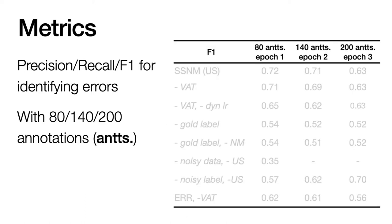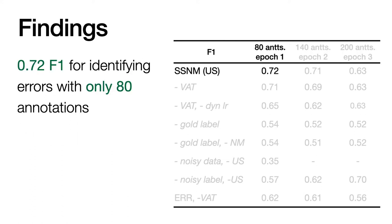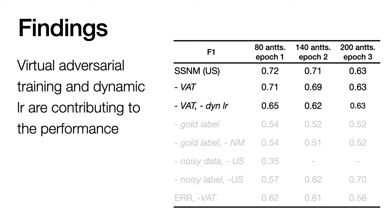The performance is measured by the precision, recall, and F1 score for identifying errors, and is measured at several stages during the active learning process. With only 80 annotations, our model achieved an F1 score of 0.72, while the number is 0.35 for supervised classification, and 0.57 for semi-supervised classification. When only using noise models, the F1 score is 0.54. Ablation studies show that components like virtual adversarial training and dynamic learning rate are contributing to the performance.